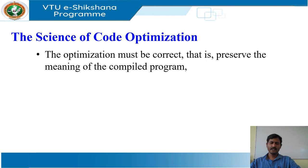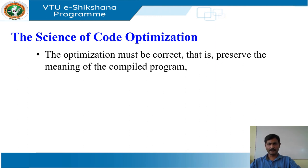Compiler optimizations must meet design objectives, and it is impossible to over-emphasize the importance of correctness. It is trivial to write a compiler that generates fast code if the generated code need not be correct. Optimizing compilers are so difficult to get right that no optimizing compiler is completely error-free. Thus the most important objective in writing a compiler is that it is correct.